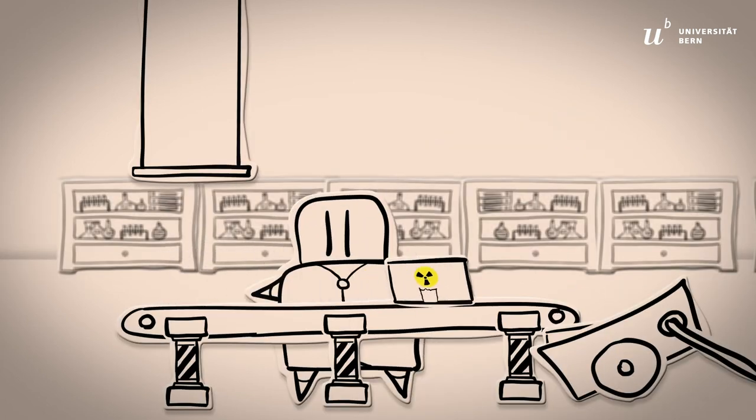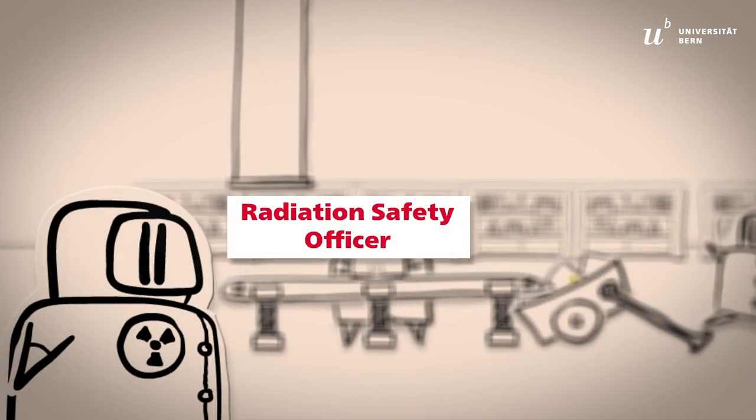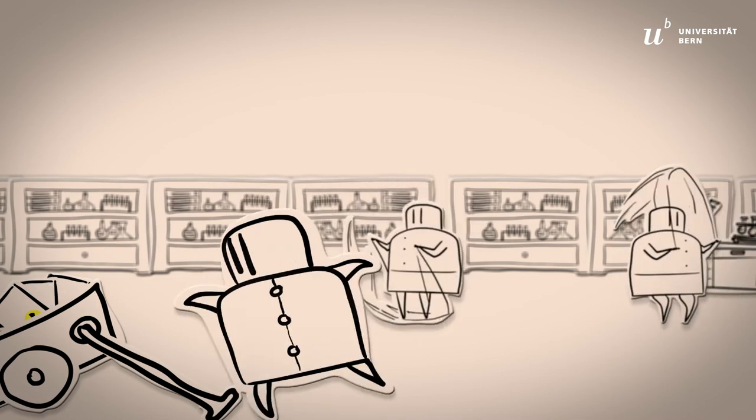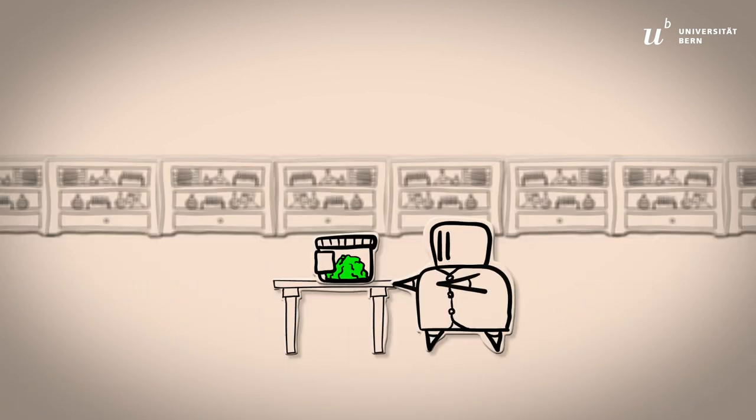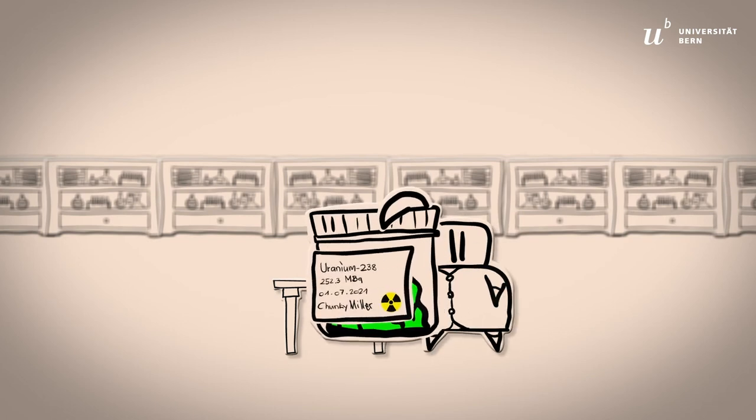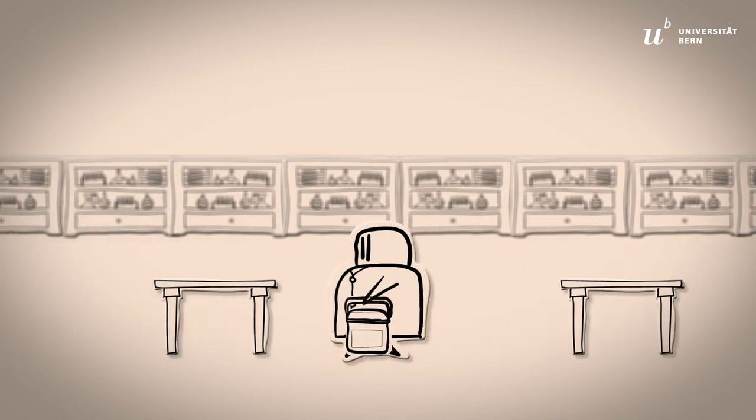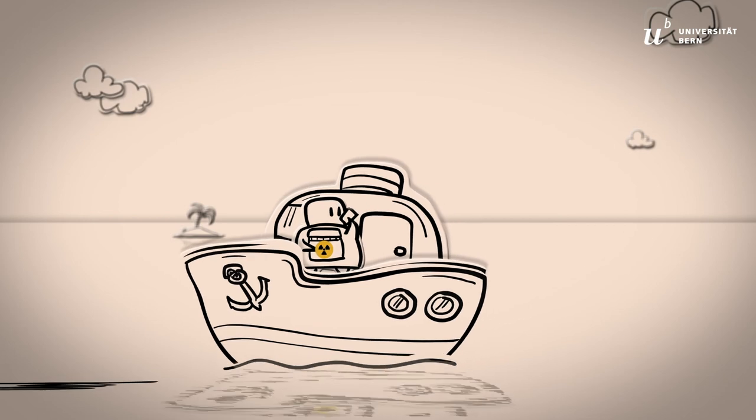All transports of radioactive sources must be approved by your radiation safety officer and must be carried out solely by trained personnel. For transport inside the building, secure the properly labeled source in double packaging. For national or international transport, consult the dangerous goods safety advisor from the risk management department.